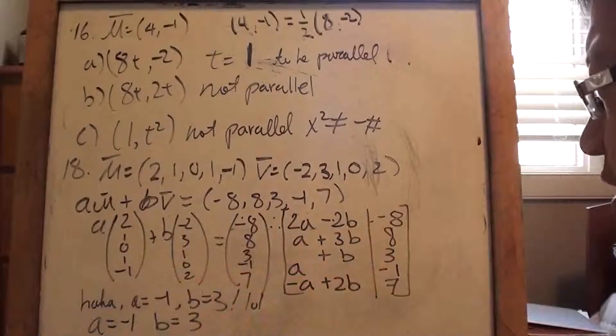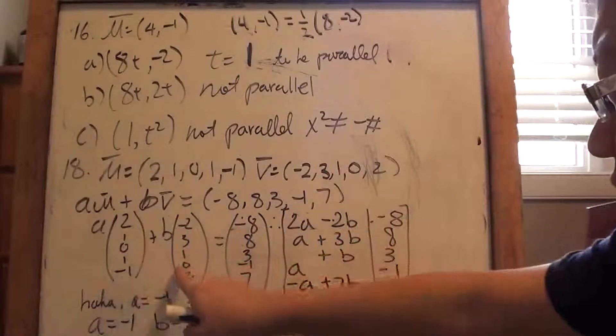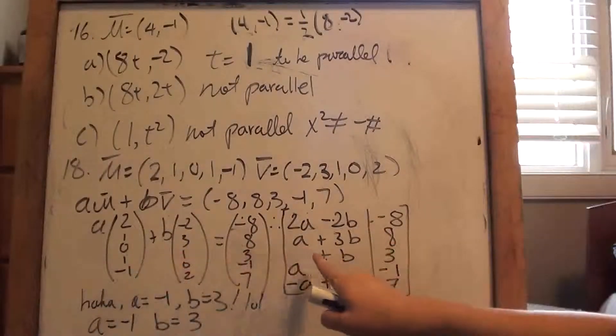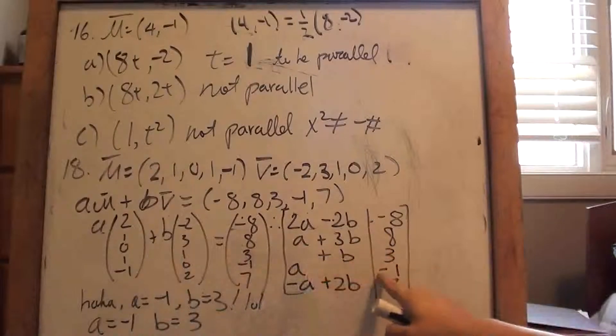Here's an interesting thing though, right? You see, notice these zeros here? Because of that, we have b equals to 3 and a equals to negative 1. We don't even have to do elimination. This is beautiful.